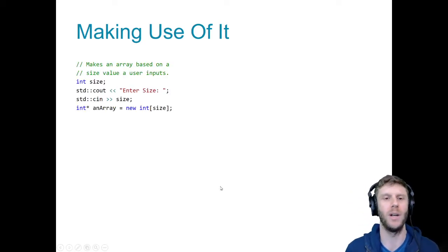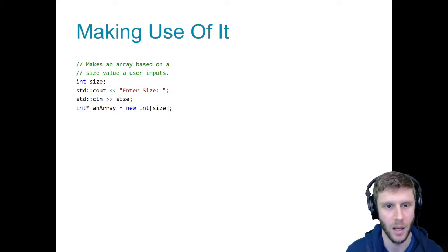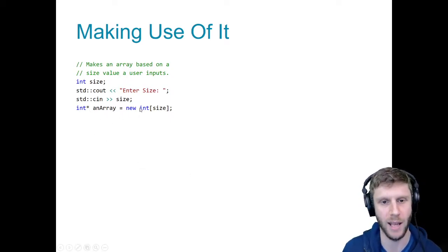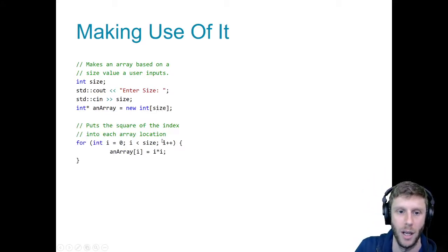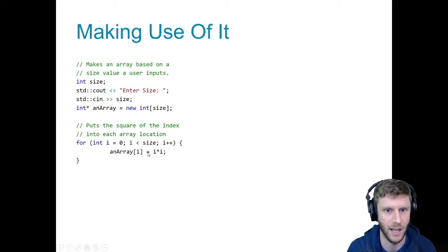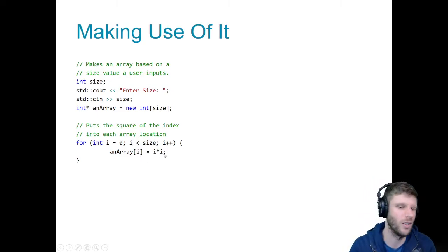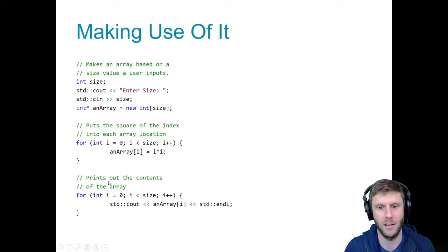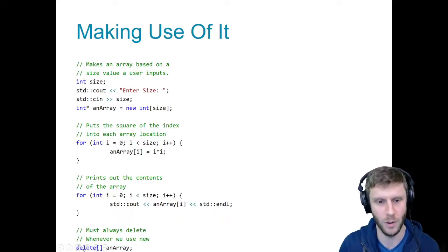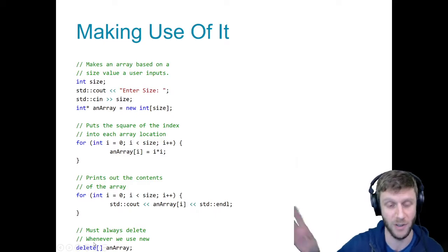Here's an example of using a dynamically allocated array. Enter size — someone puts in a value, maybe 5 or 10. We've got our pointer to the beginning of an array, and we say: create a new integer dynamic array of size whatever the user entered. Then for i from 0 to size, put in i-squared at each index. Then we print out the contents using a print function. Of course, we've got these news, so we're going to want to delete. When we're done, we delete our array because we're good programmers. Done — we have no memory leak. We created something dynamically, and then we tell the computer we don't need it anymore. Delete, goodbye.